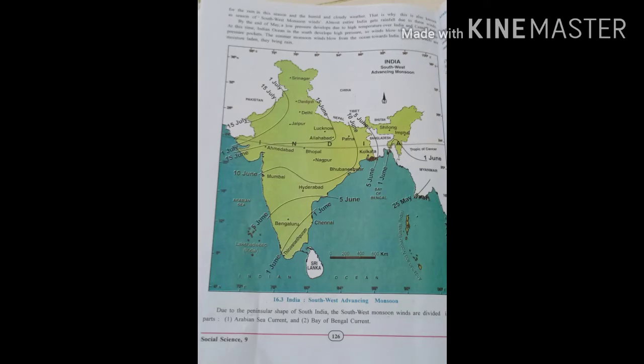Now monsoon season. Southwest winds are responsible for bringing rainfall in India. Almost entire India gets rainfall due to these winds. By the end of May, low pressure develops due to high temperature over India and central Asia. At this time, Indian Ocean in the south develops high pressure, so winds blow towards northern low pressure pockets.